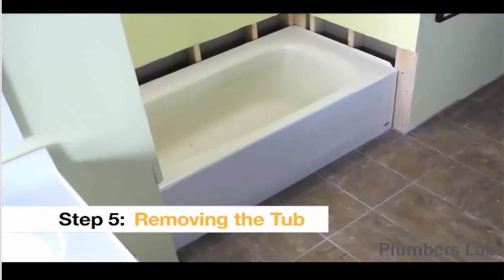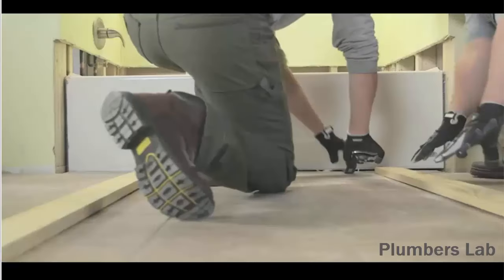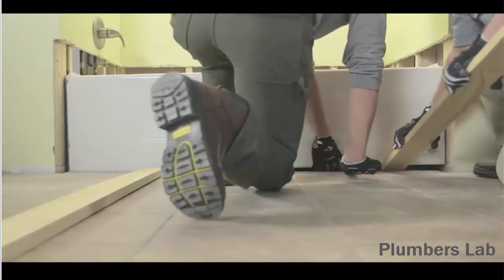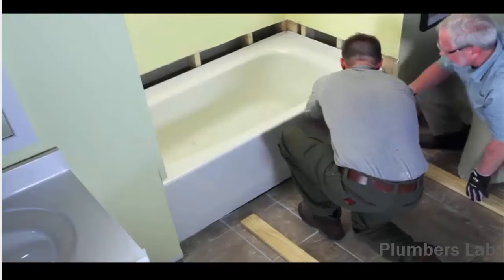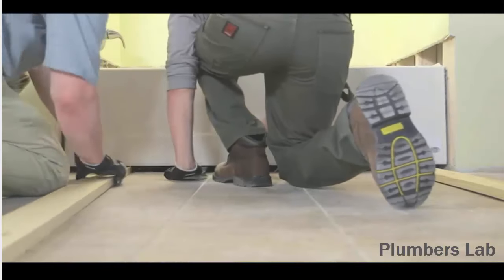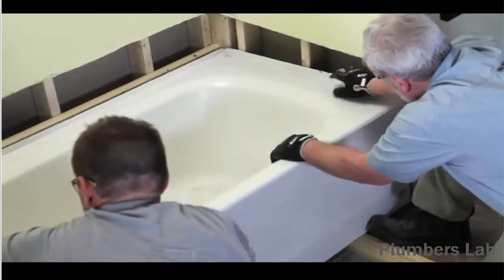You'll need a helper for these next few steps. One of you will lift up the front edge of the tub, while another slides a couple of 1x4s underneath it to get it off the floor. Slide the tub out of the alcove using the 1x4s as skids.